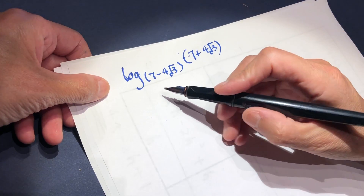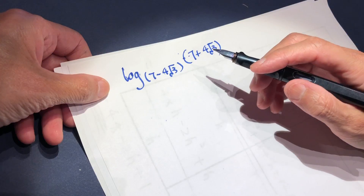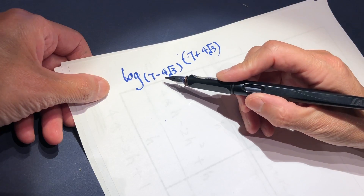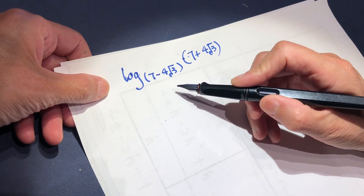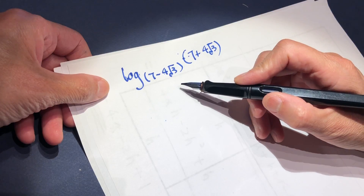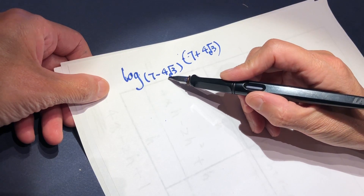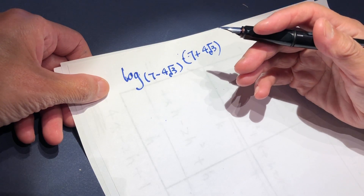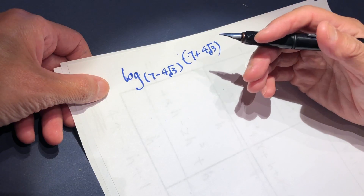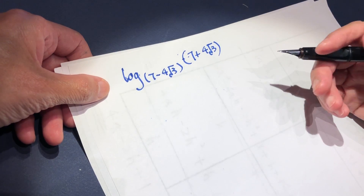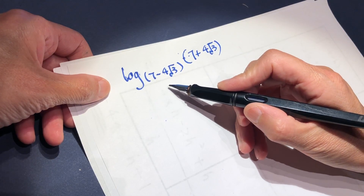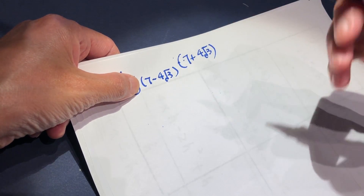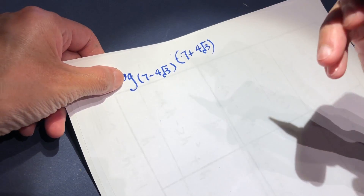Another way: you look at this number and look for something interesting about these two numbers. These two numbers are real numbers, but they are irrational. Four root three is irrational because it cannot be expressed as two integers dividing each other.